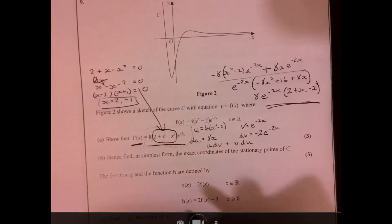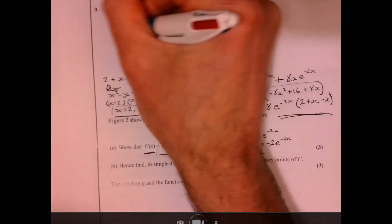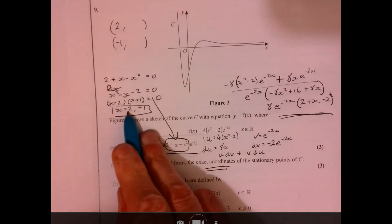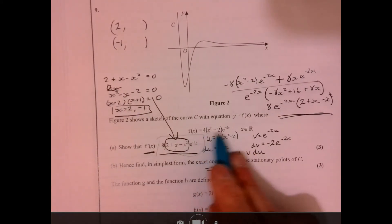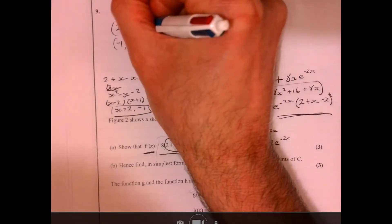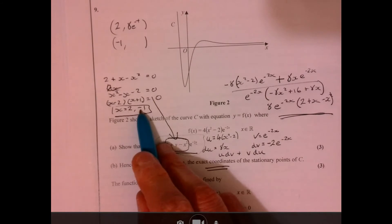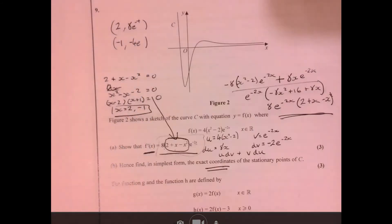Now it said give the exact coordinates. So I'm going to have 1 that's got 2 at the beginning. I'm going to have 1 that's going to have a minus 1 at the beginning. And then all I've got to do is substitute these guys independently into the original function. And if I do that, if I put 2 in, I'll get 8e to the minus 4. And if I put minus 1 in, I'm going to get minus 4e squared.